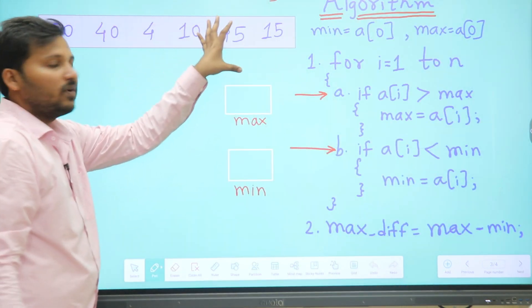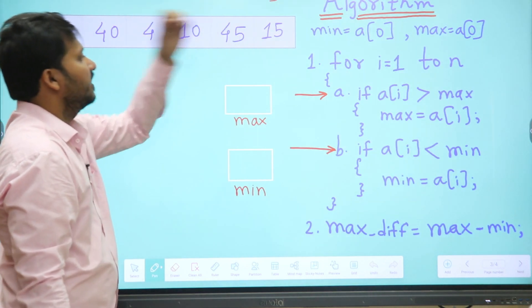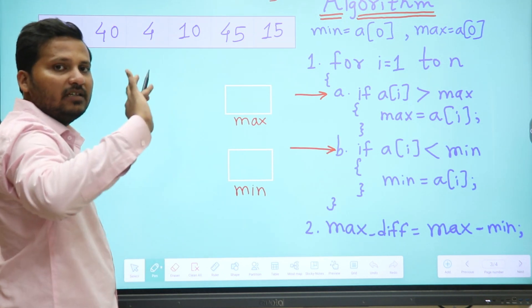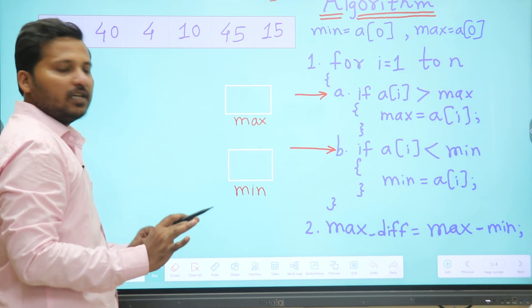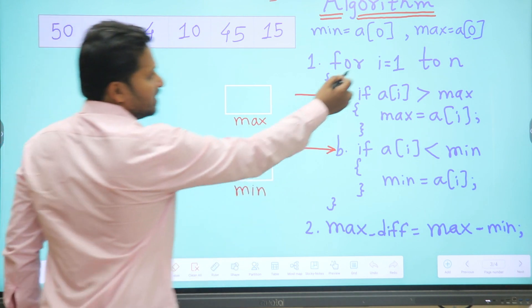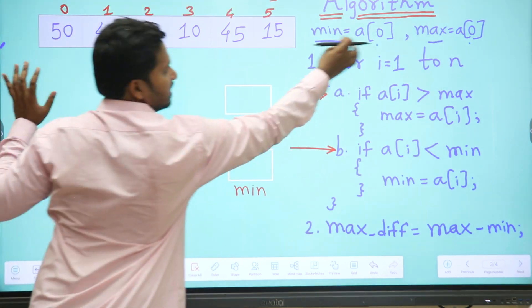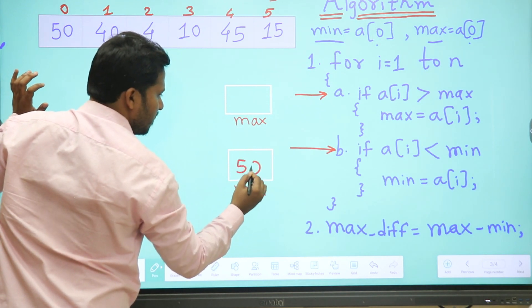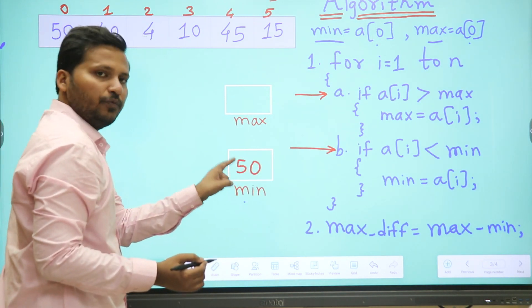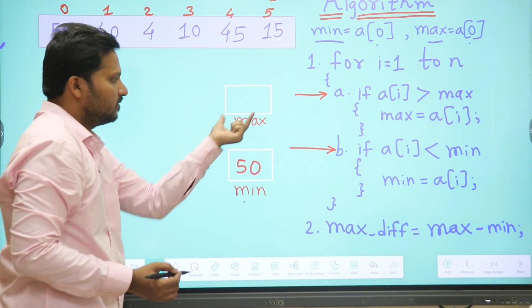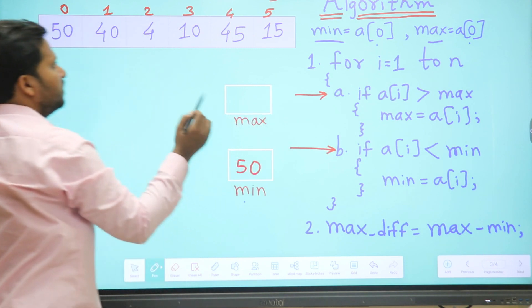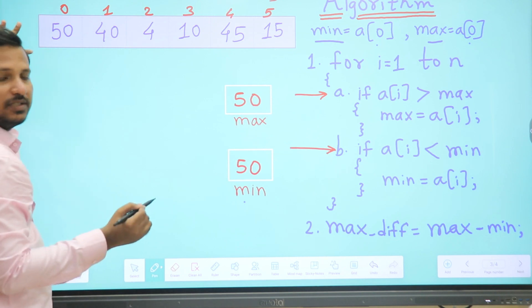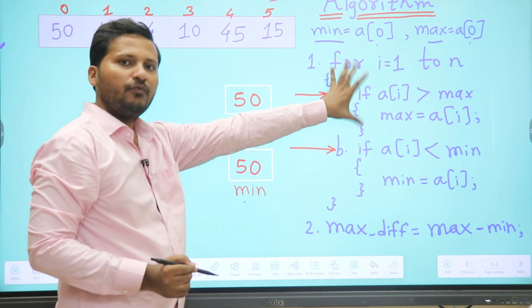For Case 1, we initialize min equal to a[0] which is 50, and max equal to a[0] which is also 50. These are the starting variable values. Now for the actual for loop, we start from index 1 since we've already handled index 0, and we iterate up to n.